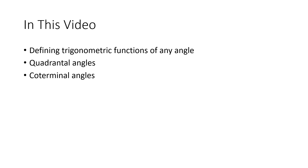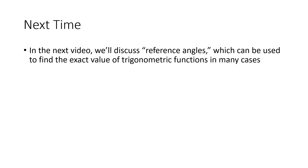So what have we done in this video? We've talked about defining trigonometric functions of any angle using a point on the terminal side, discussed the special case of quadrantal angles where it's easy to find a point, and talked about coterminal angles — two angles with the same terminal side that therefore share the same trig function values. In the next video, I'll talk about reference angles, a technique for finding exact values of trig functions in many special cases.